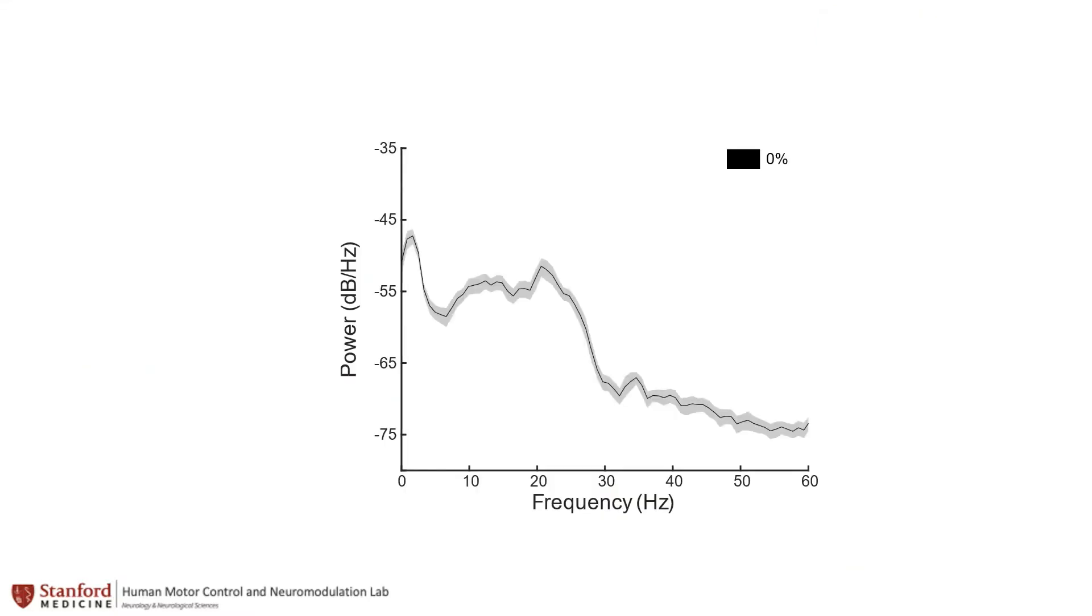It is well established that individuals with PD show exaggerated power within the beta frequency band, which we term the beta oscillopathy. The red lines mark the peak within the beta frequency band in one individual.